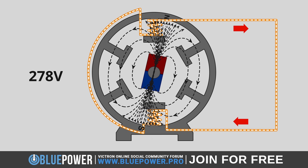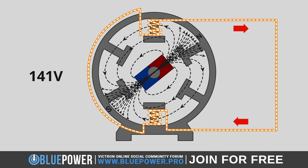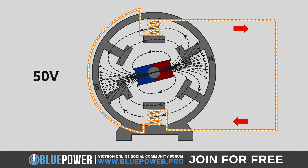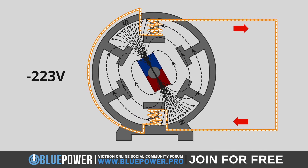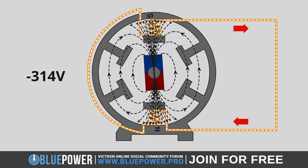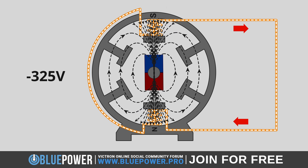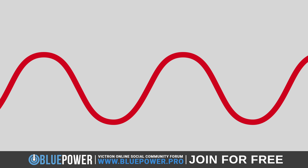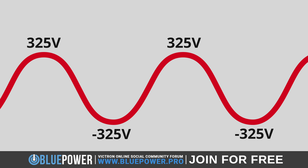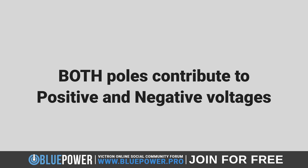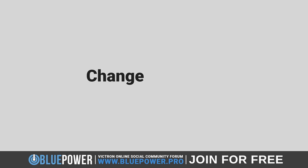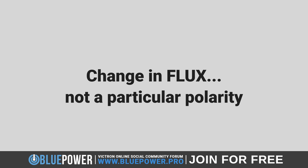As the magnet continues to spin and the north pole moves away with the south pole approaching, the magnetic flux through the coil changes direction. This change induces a voltage in the opposite direction, which we refer to as negative. This continuous change in magnetic flux direction, influenced by the movement of both poles, creates the alternating peaks — maximum positive voltages — and troughs — maximum negative voltages — of the sine wave. Remember that both poles contribute to both the positive and negative voltages as they move relative to the coils. The key is the change in flux, not just the approach or recession of a particular pole.